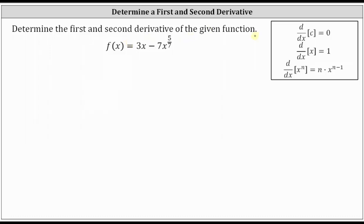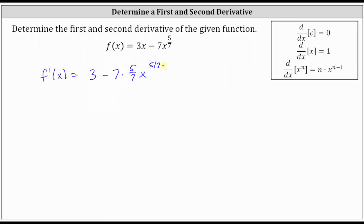We're asked to find the first and second derivative of the given function. We are given f of x equals three x minus seven x to the power of five-sevenths. The first derivative, f prime of x, is equal to the derivative of three x with respect to x, which is three times one or three, minus the derivative of seven x to the power of five-sevenths with respect to x, which is seven times five-sevenths times x to the power of five-sevenths minus one.